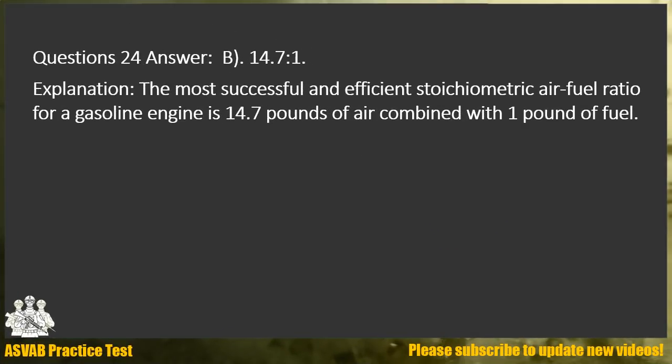Question 24. Answer B. 14.7 to 1. Explanation: The most successful and efficient stoichiometric air-fuel ratio for a gasoline engine is 14.7 pounds of air combined with 1 pound of fuel.